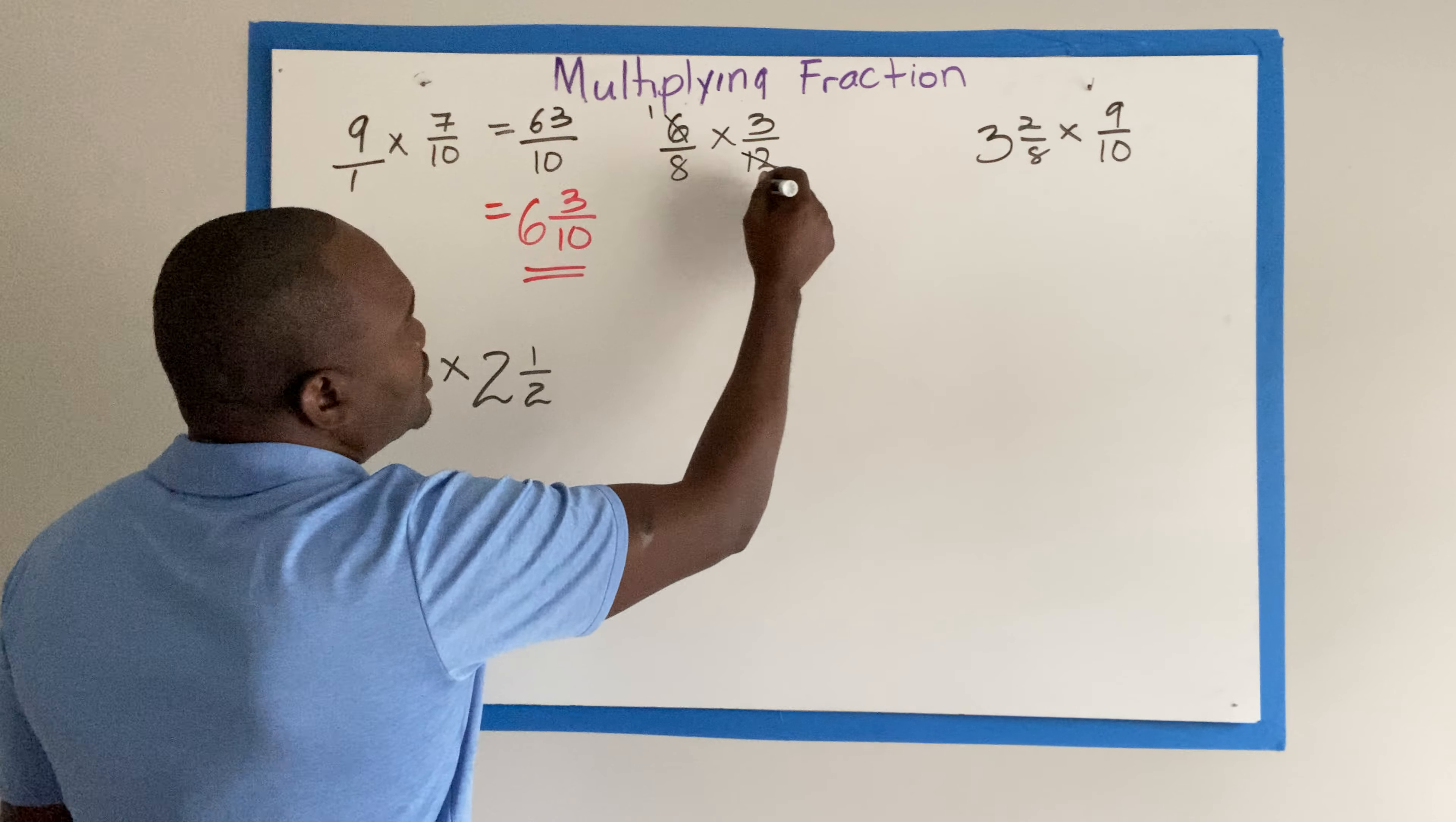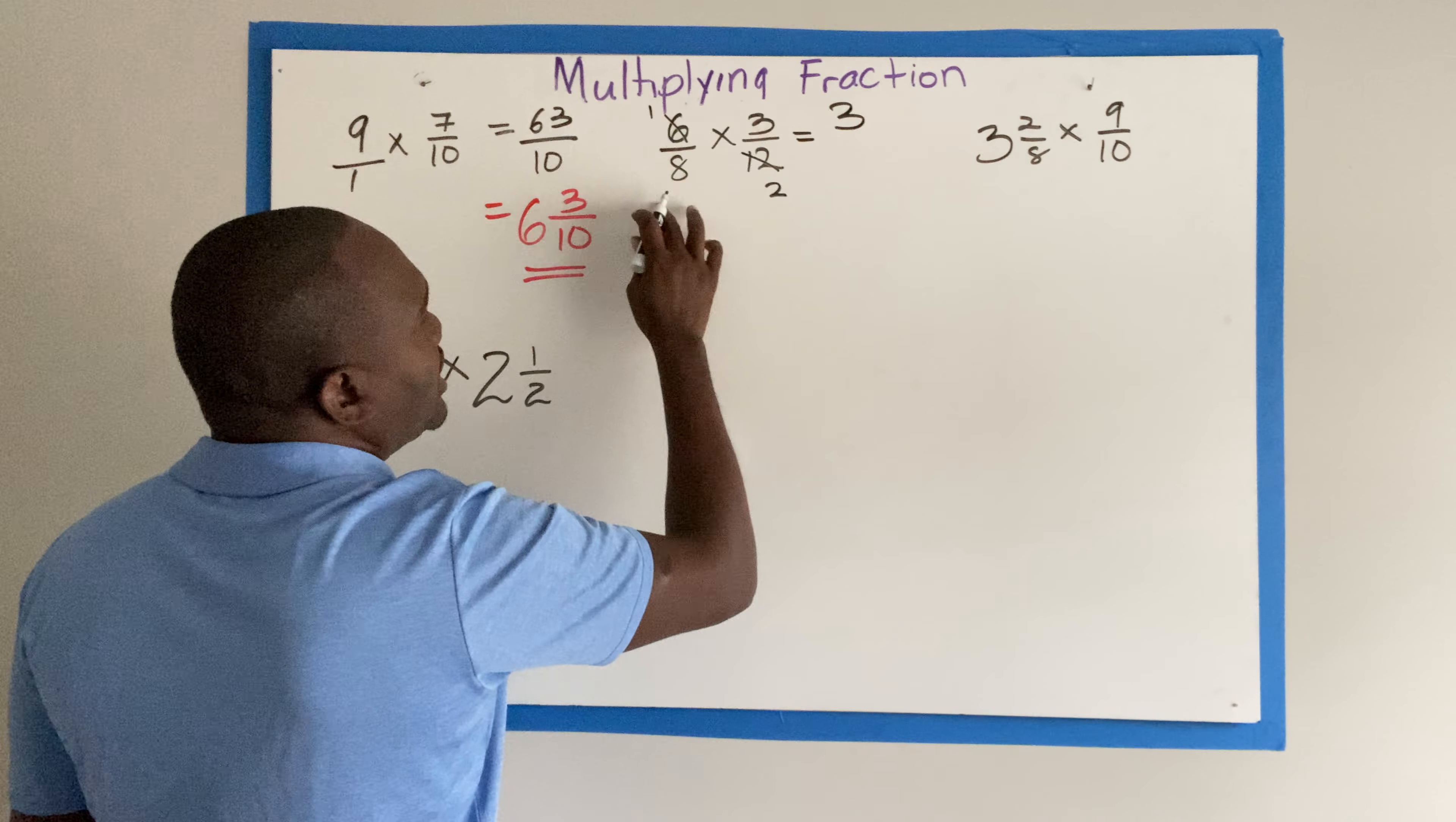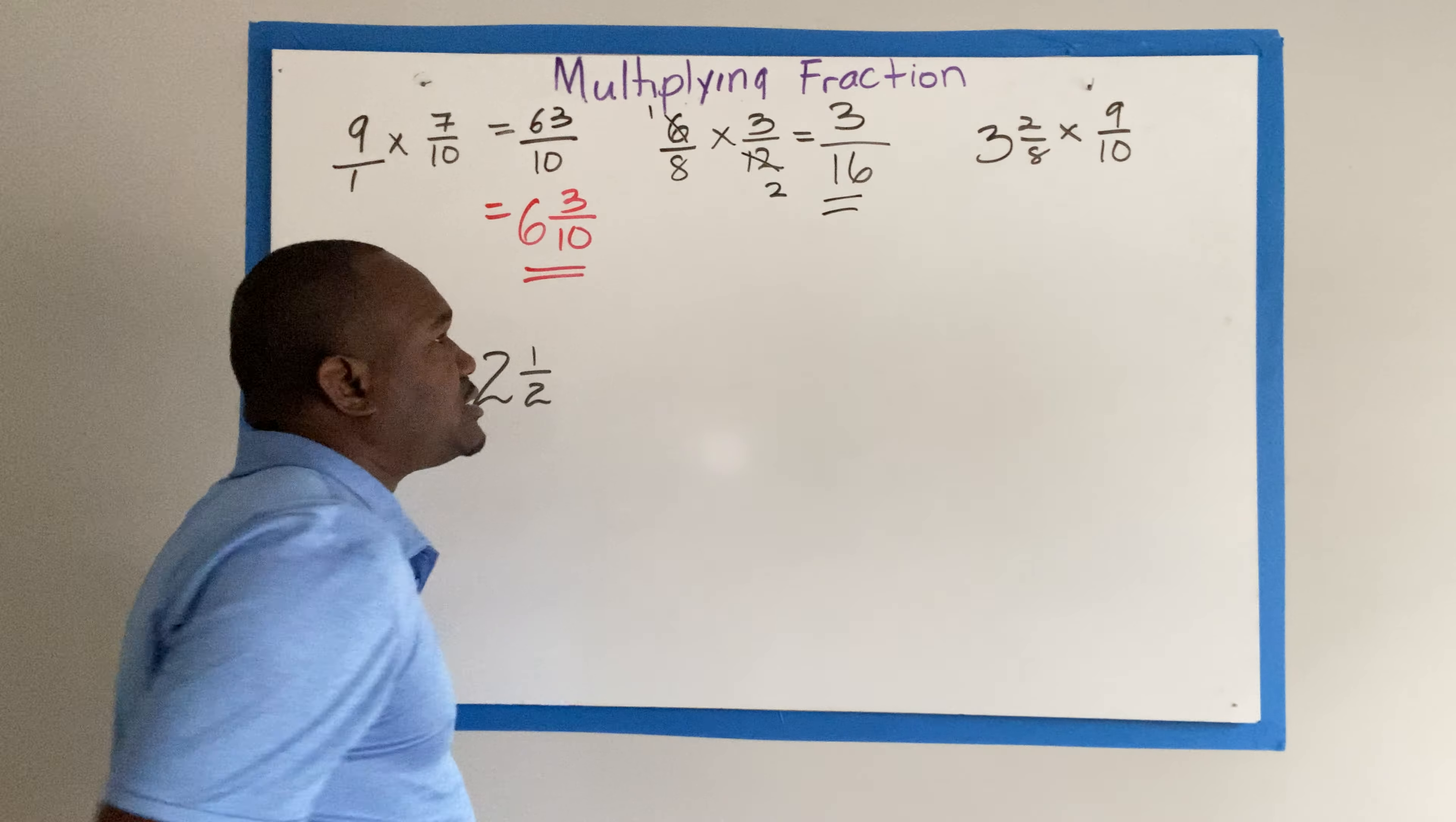So I'll go with 6 and 12. 6 and 12, 1, 6 and 12, 2. Then we multiply across. 3 times 1, 3. 8 times 2, 16. And that's our final answer.